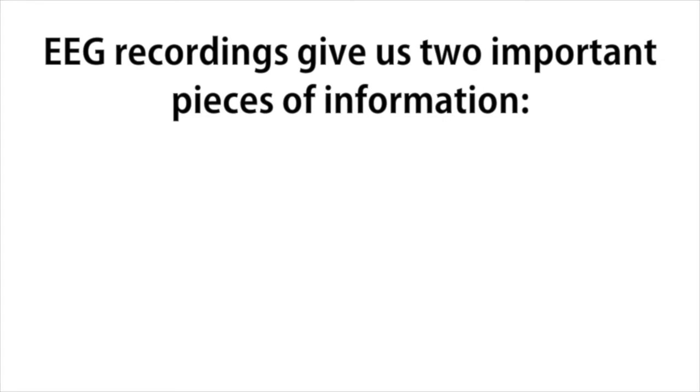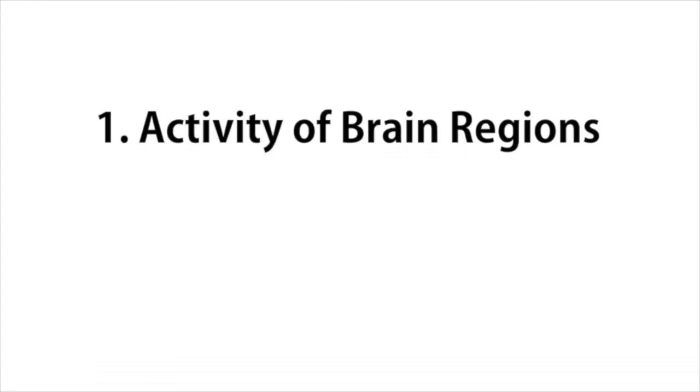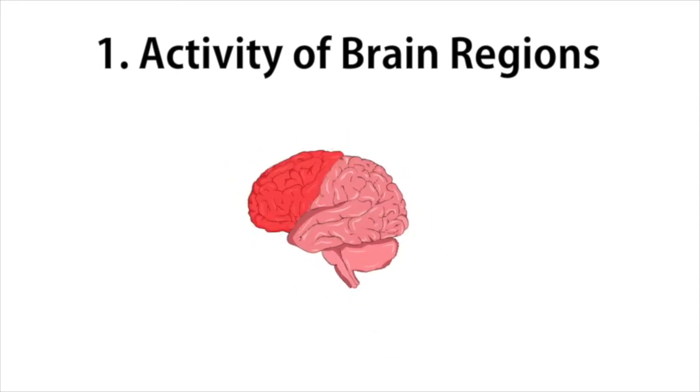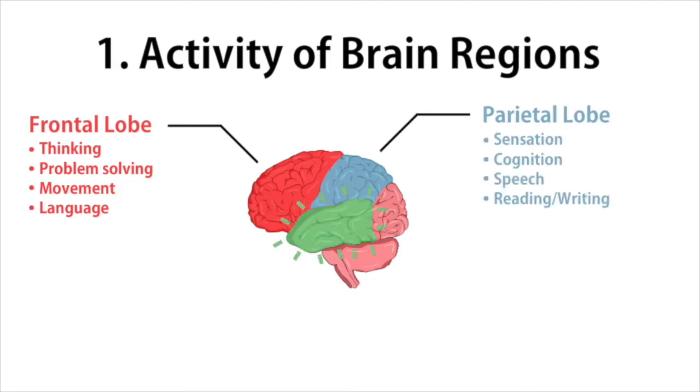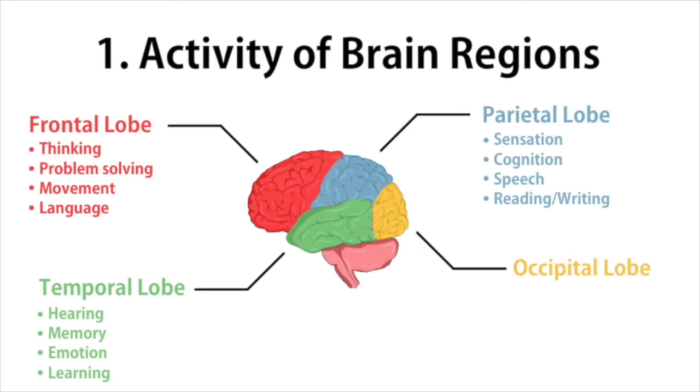EEG recordings give us two main types of information. First, different regions in the brain are most active during different types of activities, and this is reflected in an EEG recording. During an experiment, this allows us to map which brain regions are most active when a subject performs a certain task or responds to a certain stimulus.